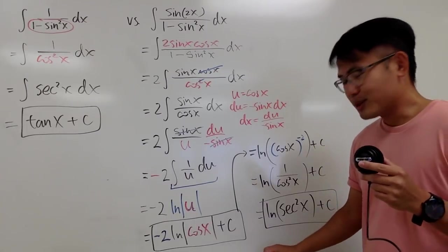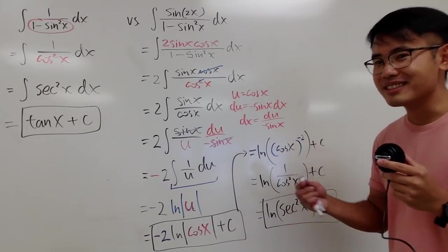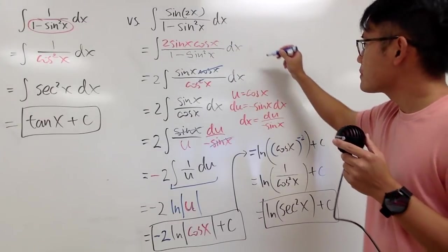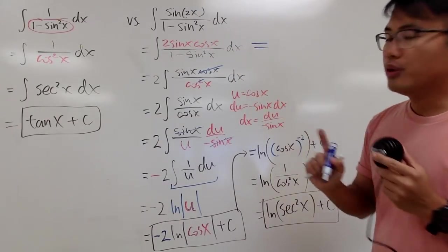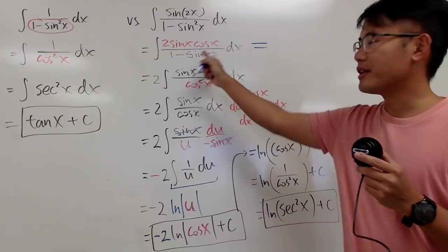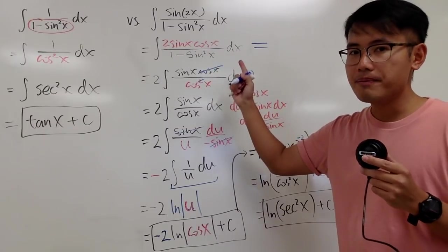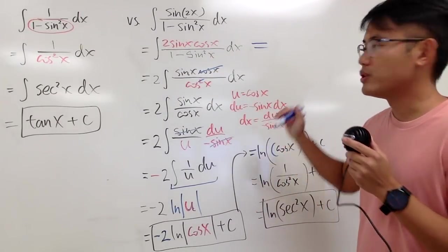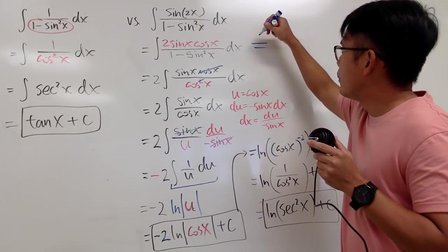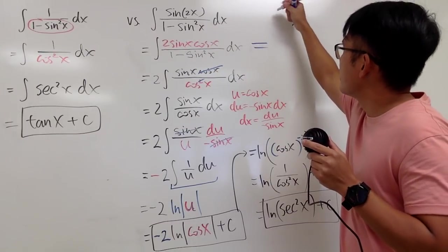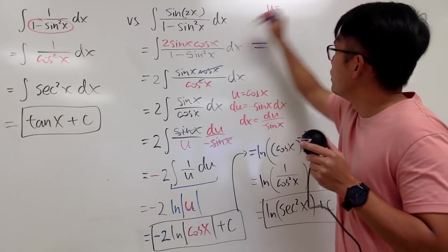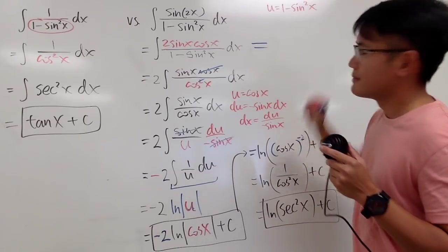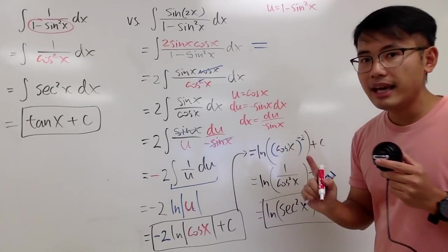That was the first approach. Now let me show you the second approach. You could have done a u-substitution right away — you can let u equal to the denominator. Let u equal 1 minus sine squared x.